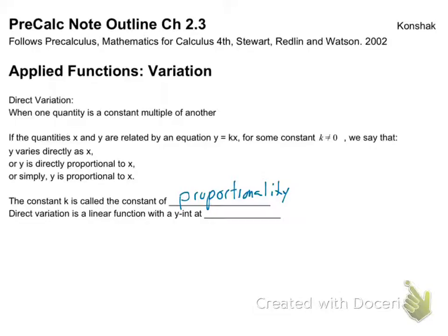Direct variation is a linear function. It's y equals kx. It just has a y-intercept of zero. Usually a line, what's the form? Y equals mx plus b. I have y equals kx. What's missing? The b, and the b stood for the y-intercept. So if it's not there, that means b is zero. So that means all of these will intercept at zero, zero, or go through the origin.